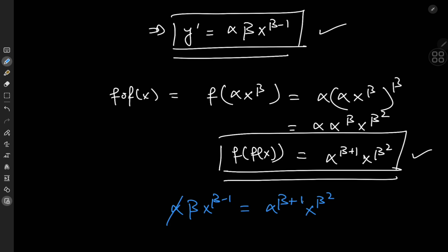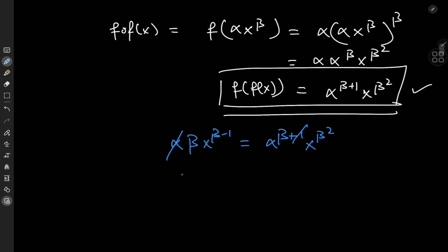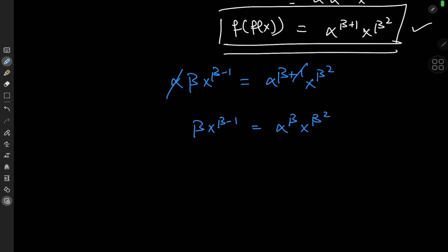I can cancel one alpha factor from both sides, giving beta times x to the beta minus one equals alpha to the beta times x to the beta squared. We can extract possible values of alpha and beta by comparing exponents and coefficients of the x terms on both sides. Comparing exponents gives beta minus one equals beta squared, and comparing coefficients gives beta equals alpha to the beta.